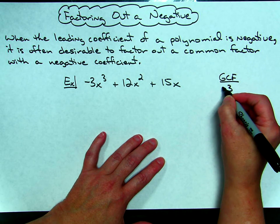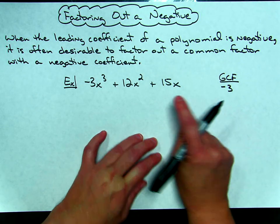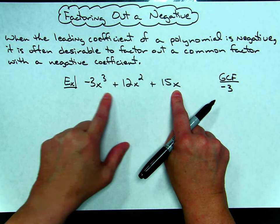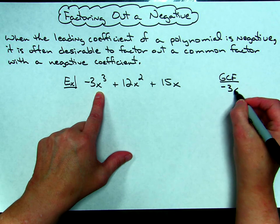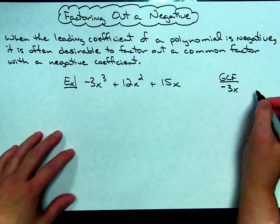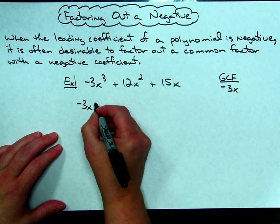But I'm going to choose to make it negative because I want to get the negative 3 out of that first term. Then I'm going to take a look at all of my variables. The largest number of variables that I can take out is going to be an x, so my greatest common factor I'm going to take out is going to be a negative 3x. I'm going to take that negative 3x out and then I'm going to see what's left.